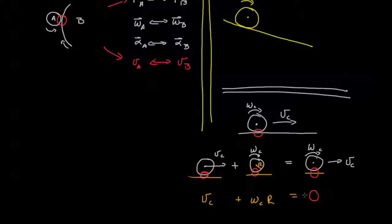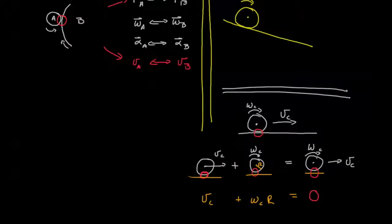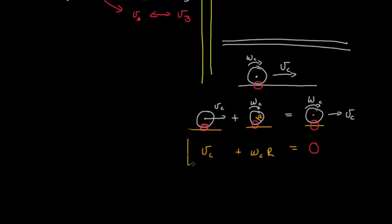We know that the velocity right there between those two components is equal to zero. Well, from our equation, all we need to do is add these two together. And if the two of them sum to zero, we have a cylinder rolling without slip or another way to say it is Vc equals Omega C r. This is our non-slip condition.